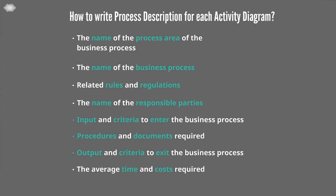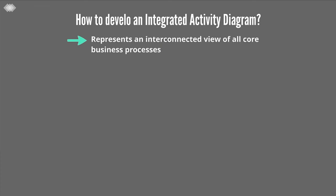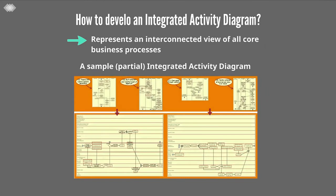Next, process analysts should develop an integrated activity diagram by integrating all activity diagrams of the business processes associated with all use cases into a single integrated diagram. The integrated diagram represents an interconnected view of all core business processes, illustrating relationships between core business processes, process participants, and information flow throughout the area under the BPA study scope. A partial integration of activity diagrams from the shrimp exportation BPA study is shown as an example.